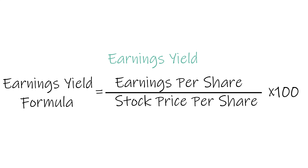The earnings yield is simply the proportion of the most recent per share earnings of a company, divided by the share price. It can be considered the inverse of the PE ratio — so we could call it the EP ratio. This can be applied to a market index as a whole.